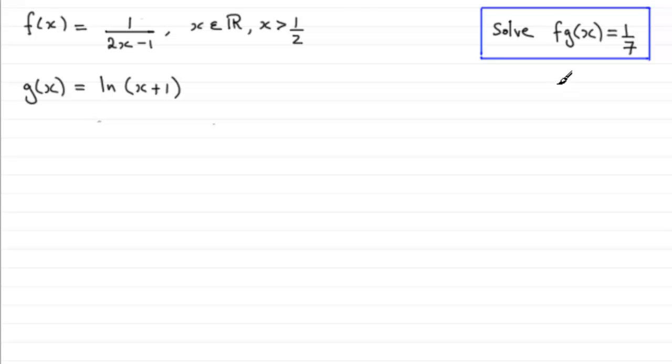So how do we do this? Well first of all, let's just put down this equation here, that we've got f∘g of x equals 1/7. So when we talk about f∘g of x, we're really doing f of whatever g of x is. So g of x is the natural log of x plus 1. I'm going to put that in square brackets there, the natural log of x plus 1, and this equals 1/7.